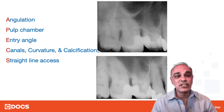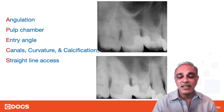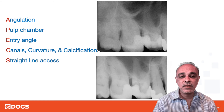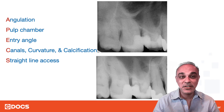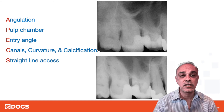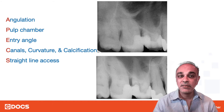That leads me to the next one — C — which is the canals. How many canals can I see? Are they wide, narrow, short, long, curved, calcified? These are things I want to know beforehand. If you think the case is calcified beforehand, maybe you shouldn't start the case to begin with if you don't feel comfortable getting through that calcification. And remember, calcifications start coronally and work their way down apically — so they're going to be calcified at the top, not at the bottom.